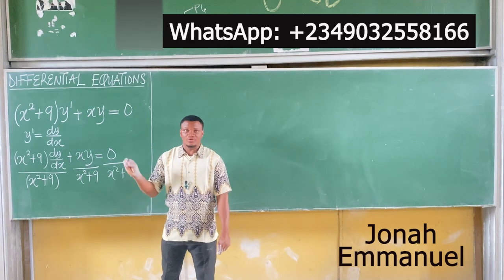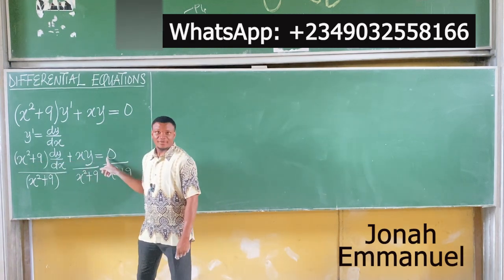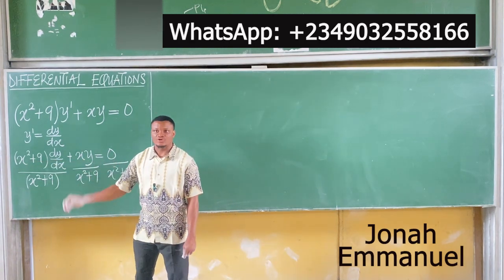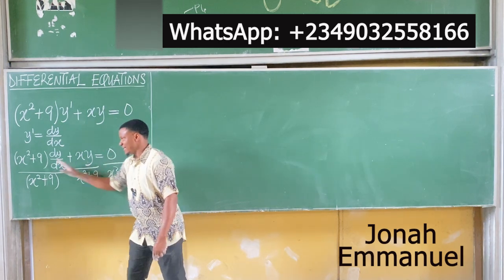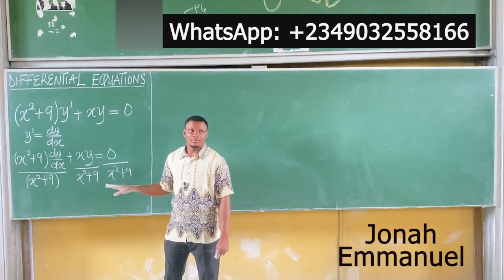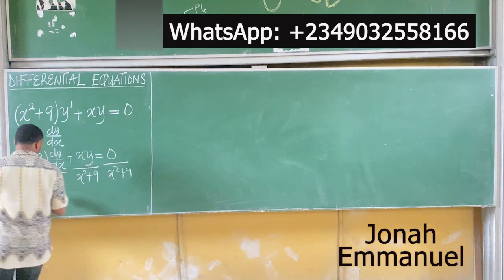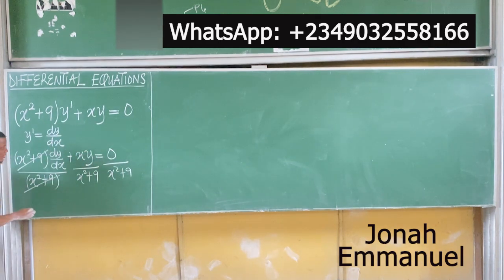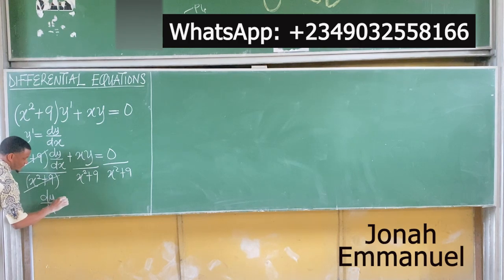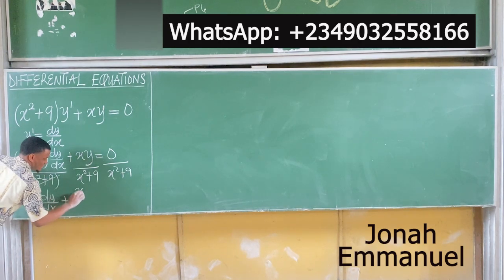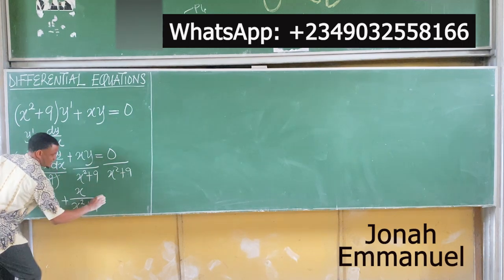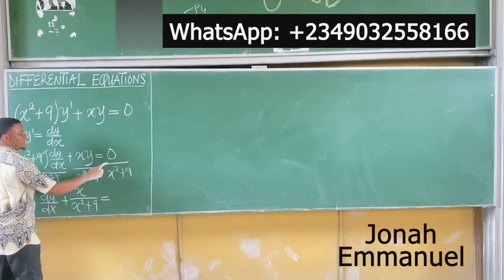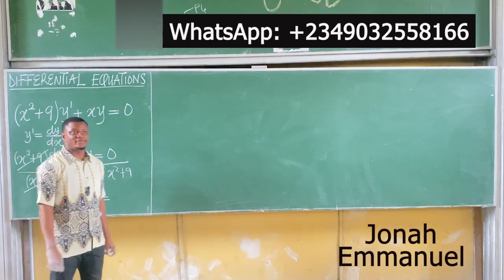In your notes, you're supposed to write the original equation first. After this, you'll write 'divide through by the coefficient of dy/dx,' then repeat and write the divided form. From here, this cancels this. You have that dy/dx plus x all over x squared plus 9, times y...